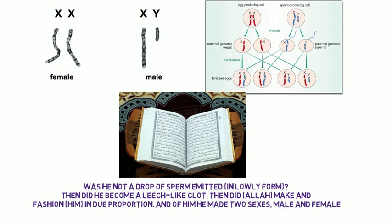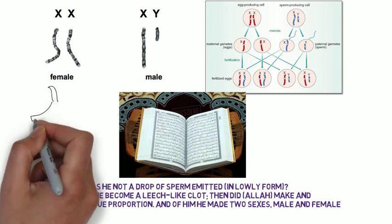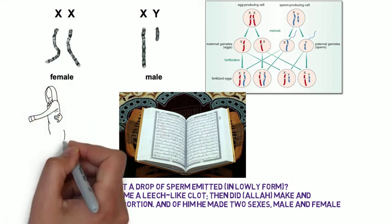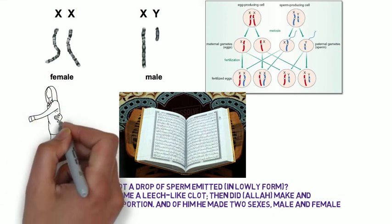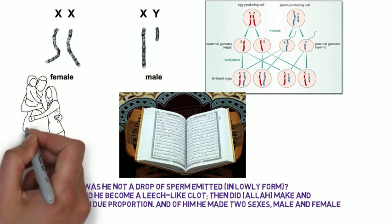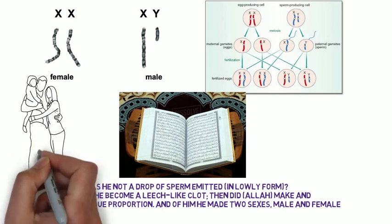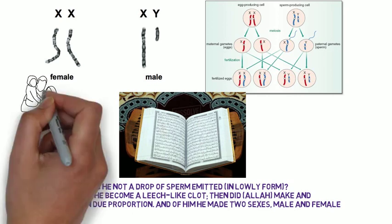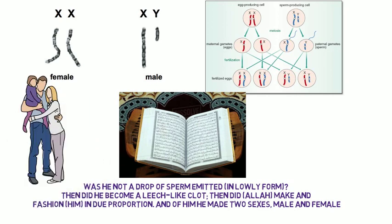As can be seen in this verse, the decision on the two sexes, male and female, happens after the creation of a human being through the drop of sperm. This clearly refers to the role of sperm in the determination of the sex. It is worth mentioning that the exact translation of the Arabic word used in this verse to describe the origin of man is a drop of sperm coming from a male.